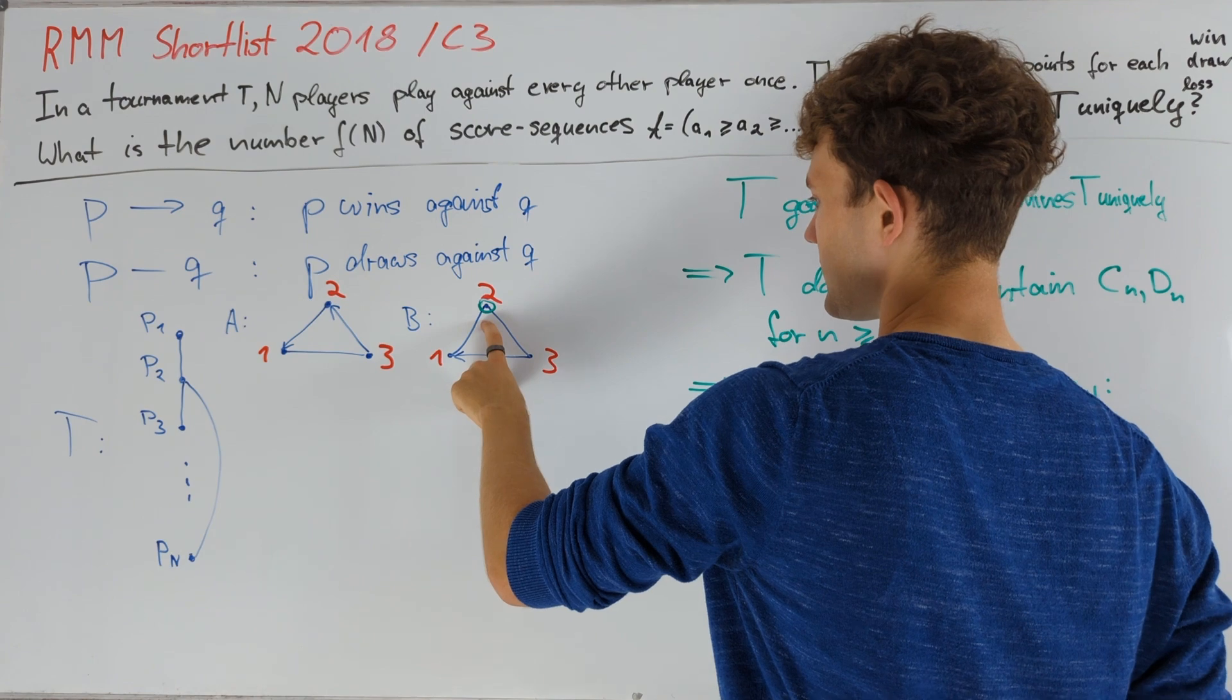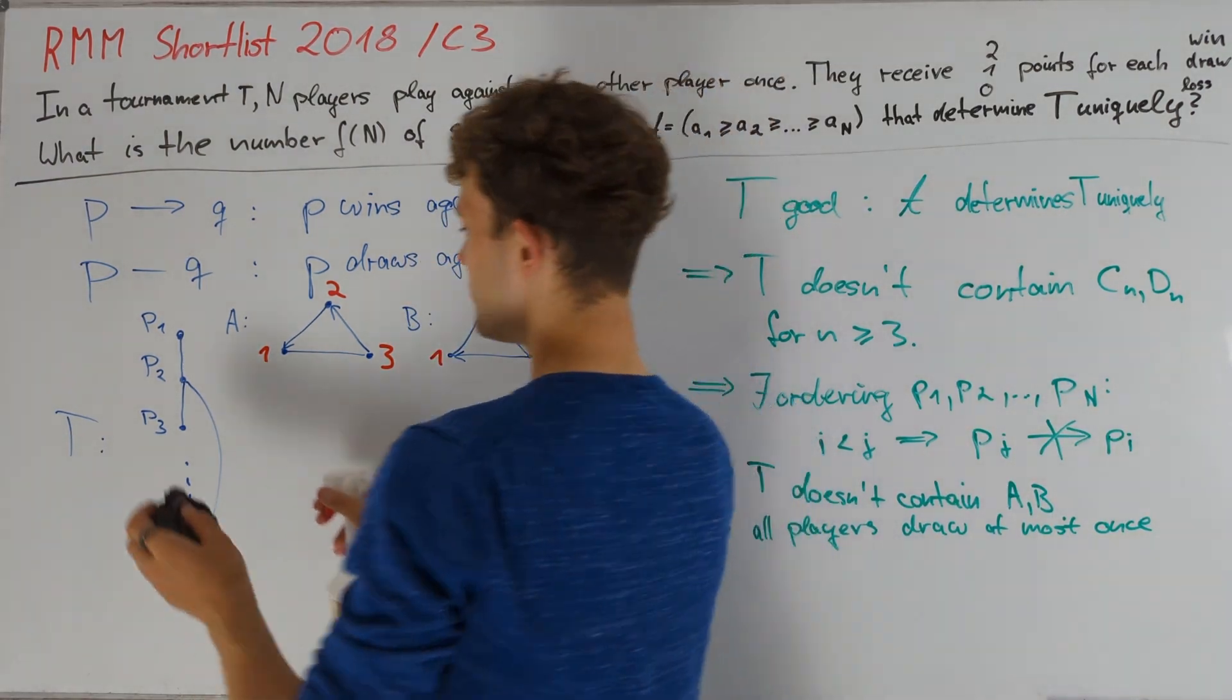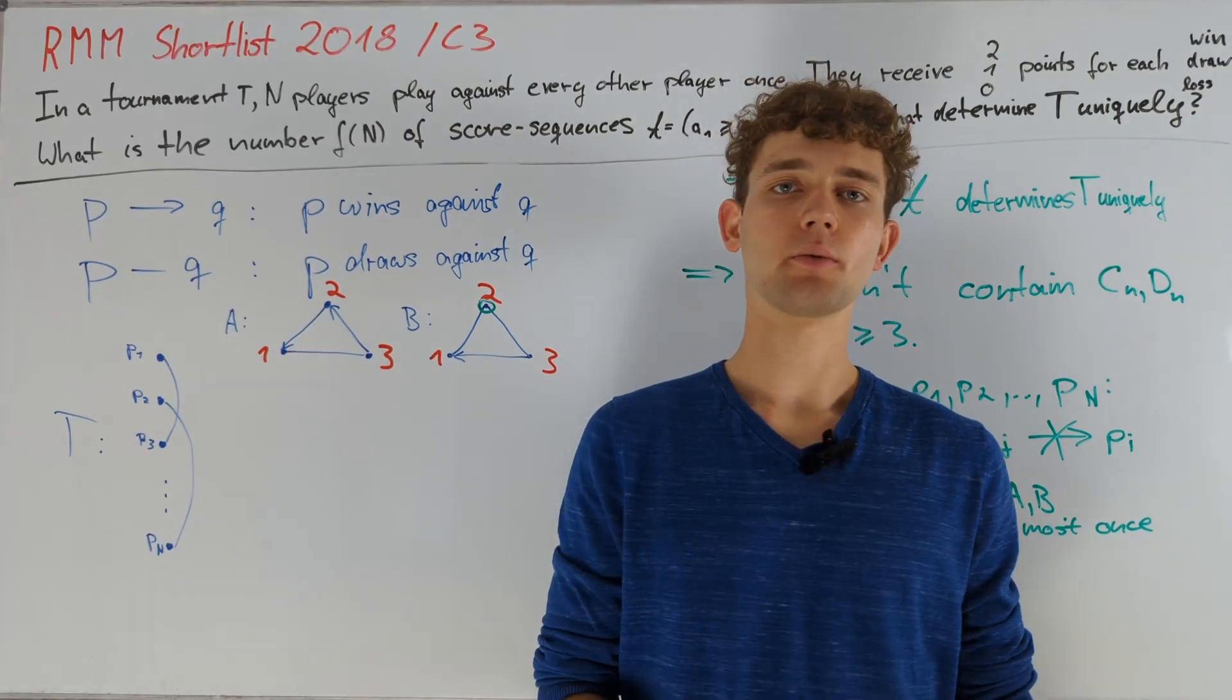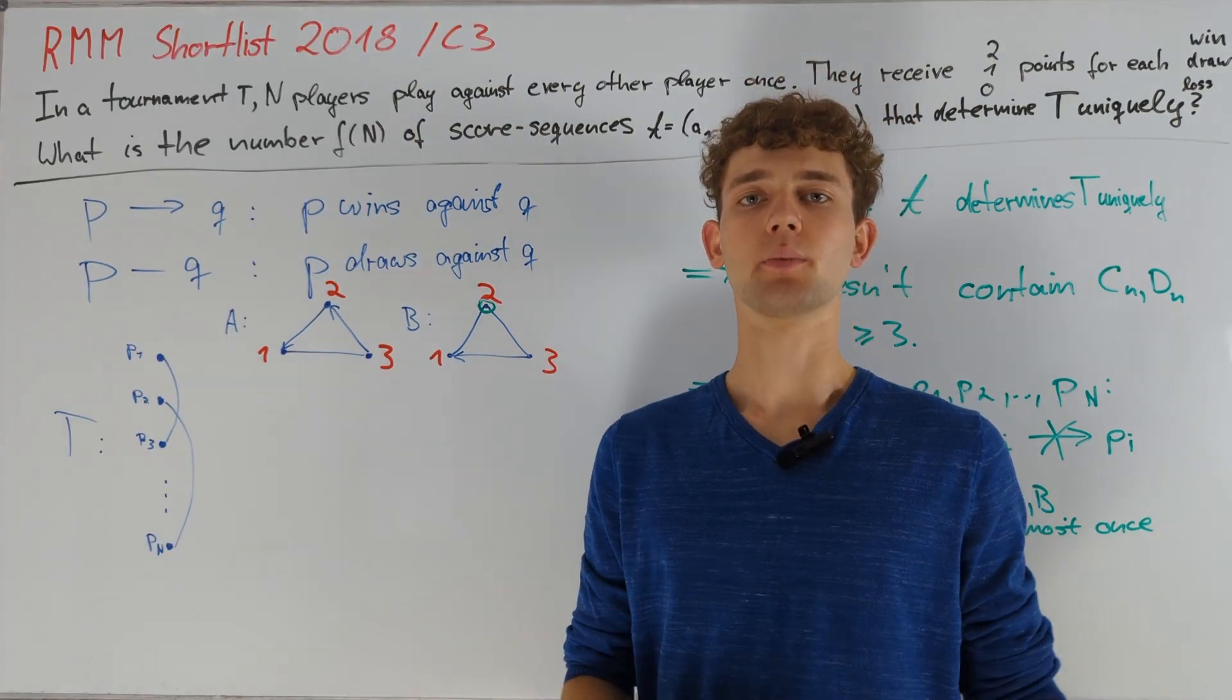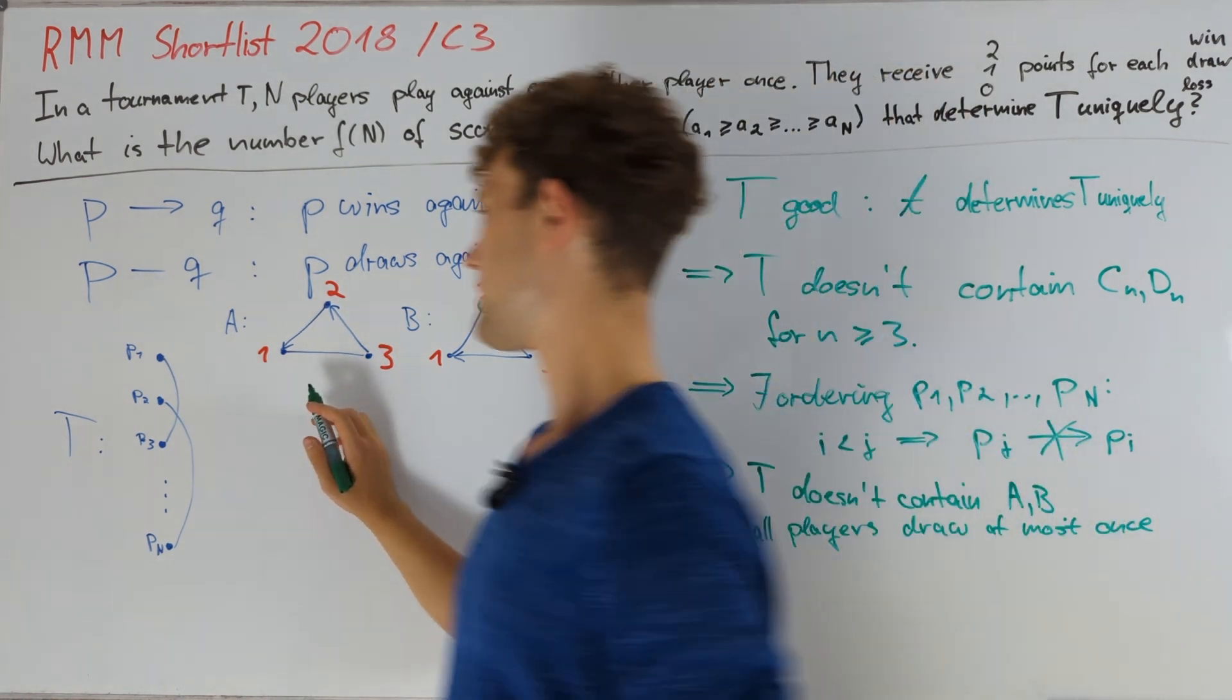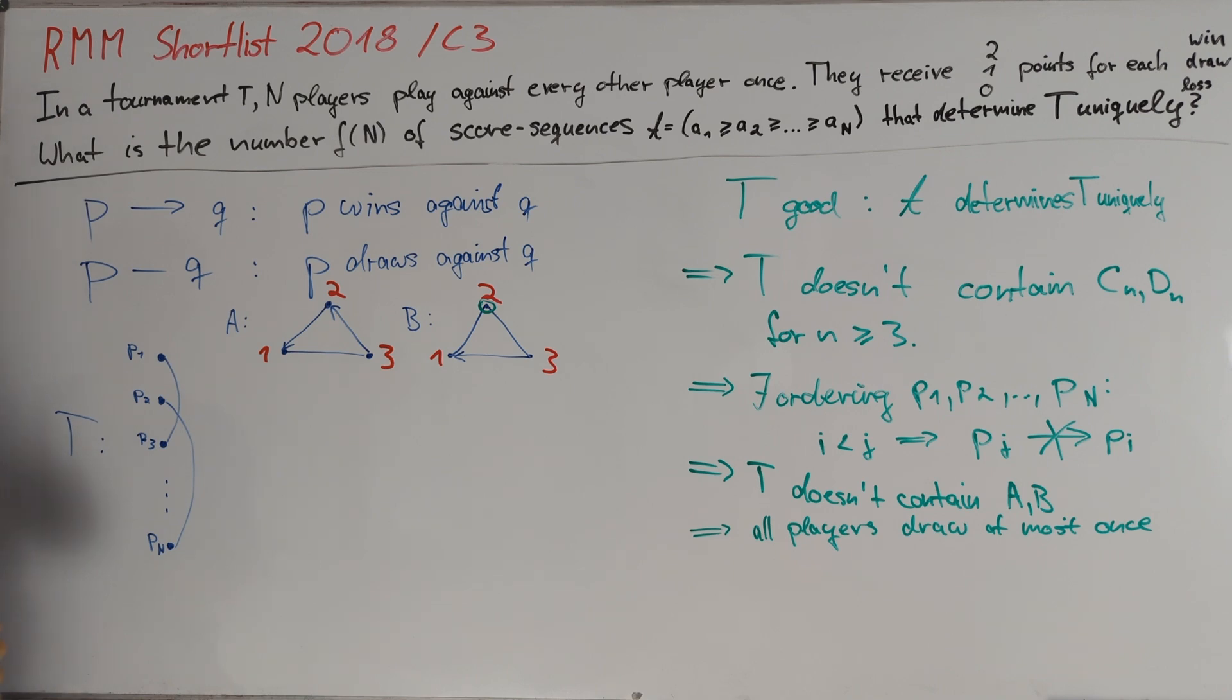Let's use this new knowledge to draw a new possible picture for T. So this graph is now a matching, which precisely means that any vertex has degree at most one. Now we take a look at A and notice that this tells us that even this is not a possible choice for T because we really have those edges in our tournament, or P1 wins against P2, P2 wins against P3, which gives us precisely A as a subgraph here. Therefore we can have draws at most between players Pi and Pi+1.